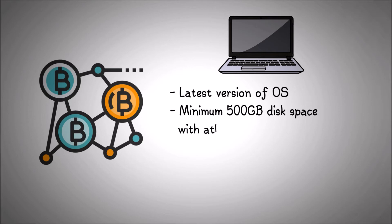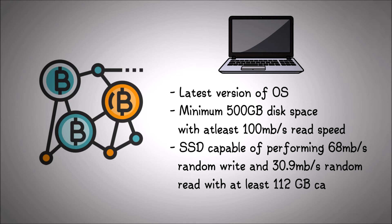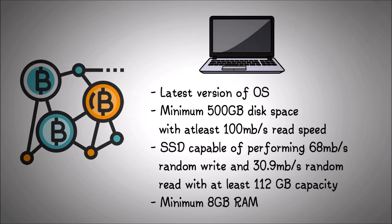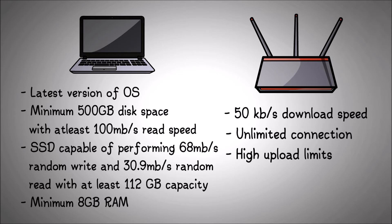You need 500 GB or more of free disk space available with a minimum read speed of 100 MB a second, and an SSD capable of performing 68 MB a second random write and 30.9 MB a second random read with at least 112 GB capacity and at least 8 GB of RAM. You would also need a broadband internet connection with a download speed of at least 50 kilobytes per second, unlimited connection, and high upload limits.